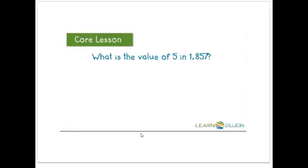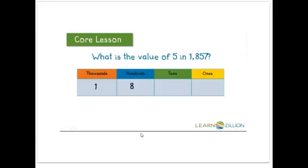What is the value of 5 in 1,857? If we look at that number on a place value chart, we see that the 5 is in the tens. So the 5 has a value of 50.